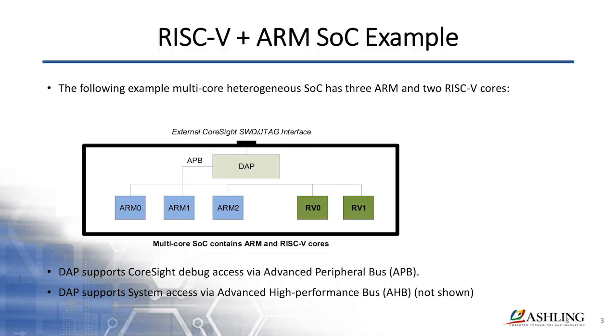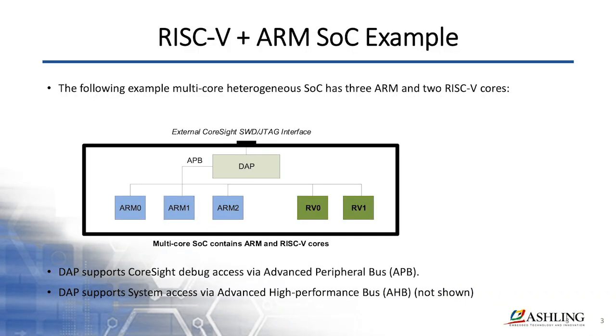So the RISC-V cores would be doing things like sensor management, battery management, IO control, and that kind of thing. In this example, the cores are all connected via a DAP interface, which comes to the outside world via an SWD interface. Some SOCs may use JTAG to connect to cores internally, compact JTAG which is a two-wire version, or if the vendor is using the ARM CoreSight technology, then they'll be using SWD.